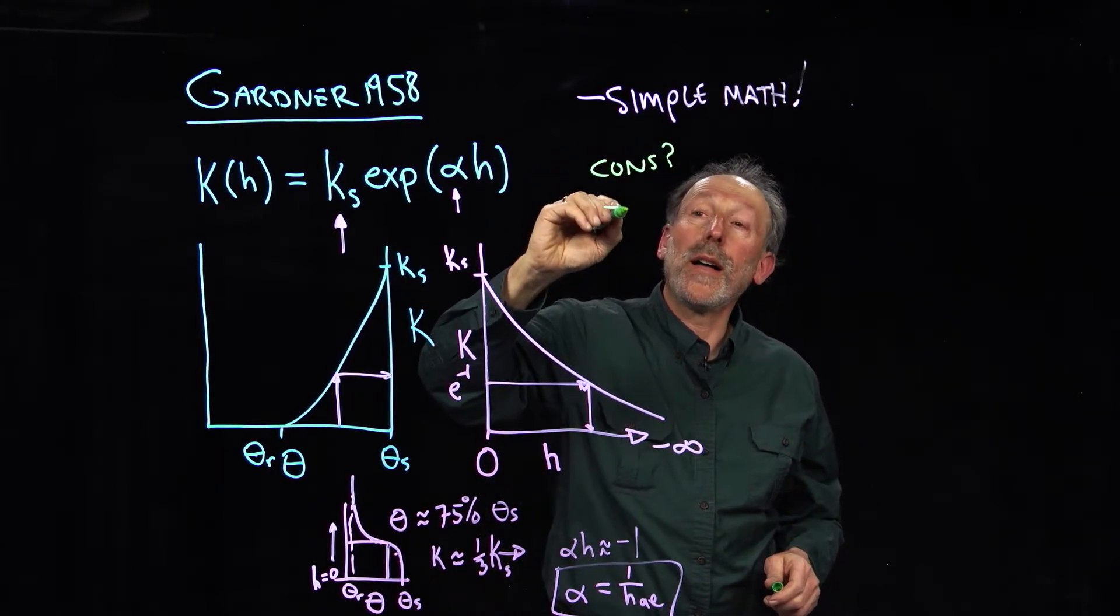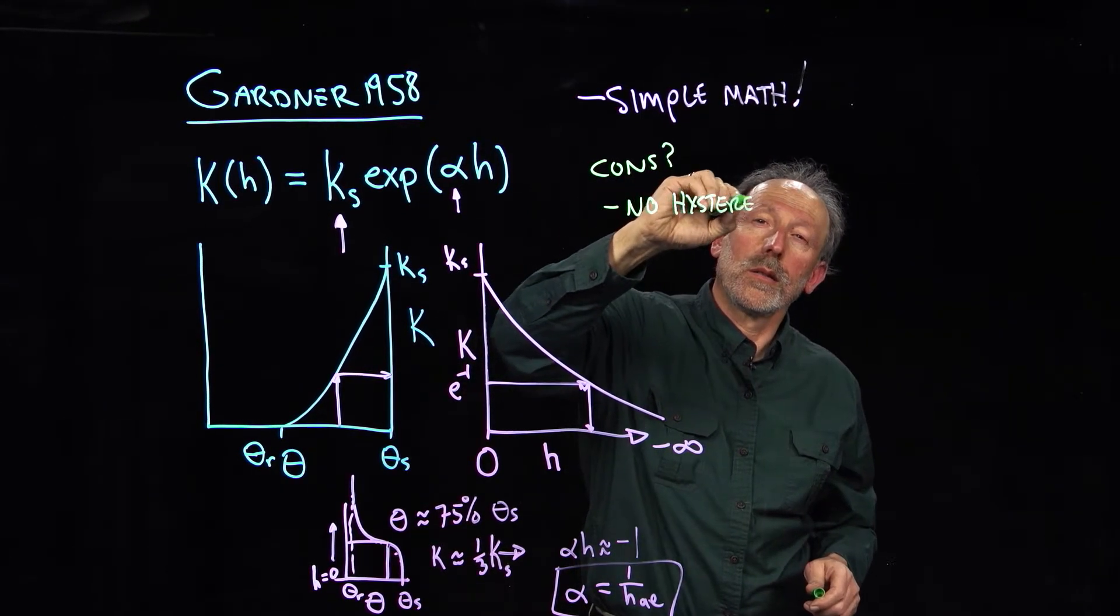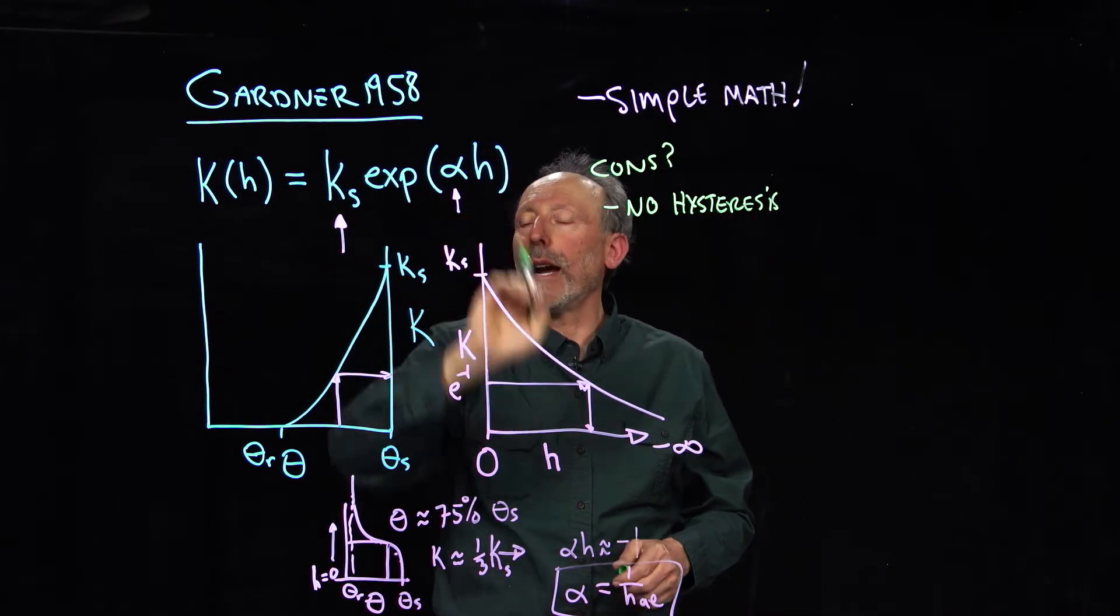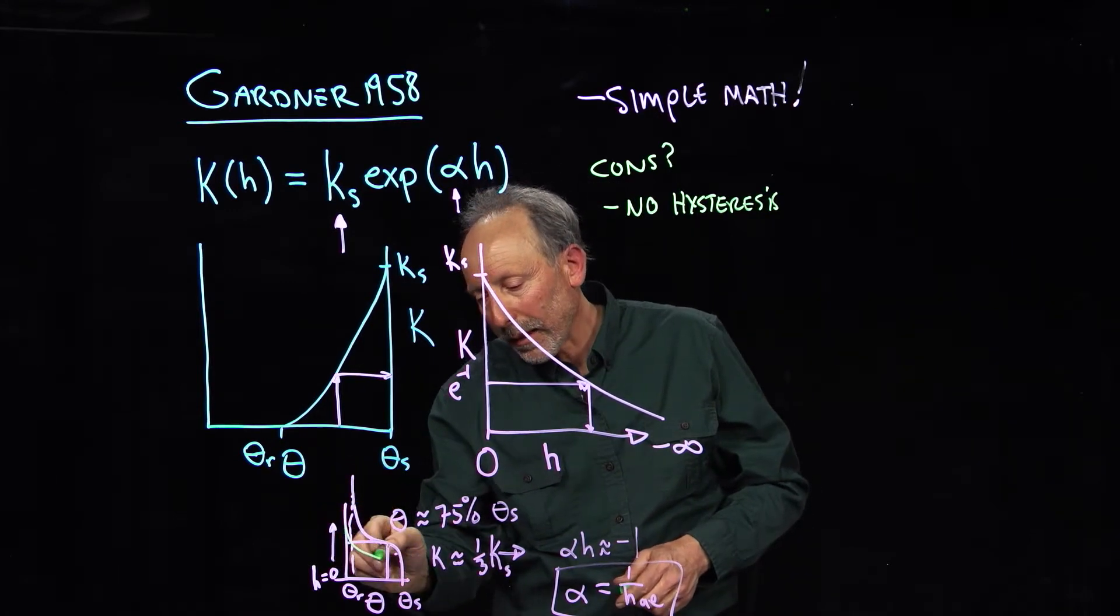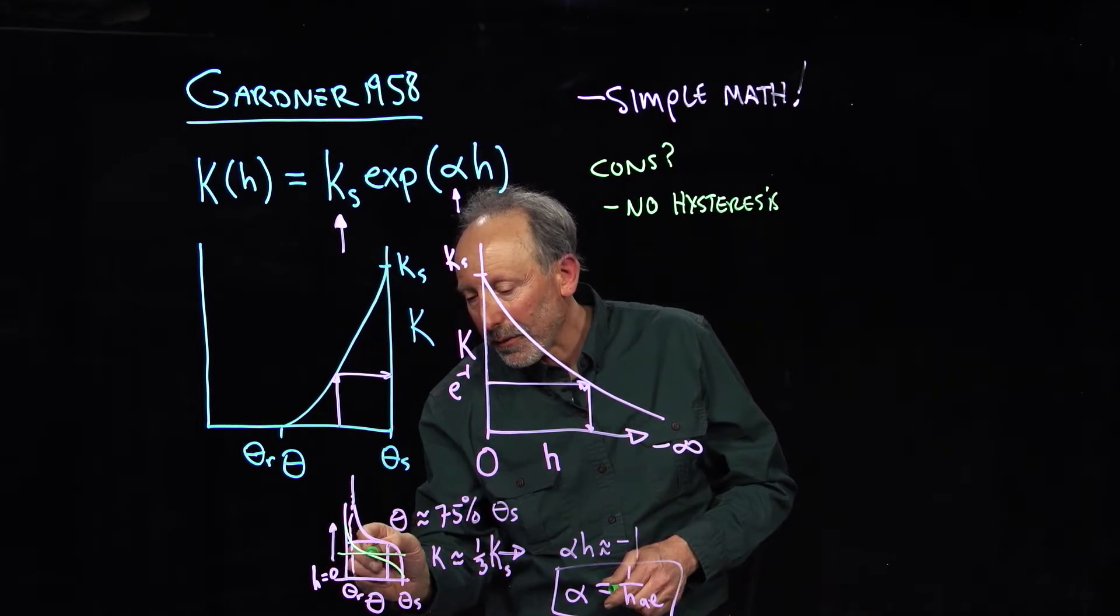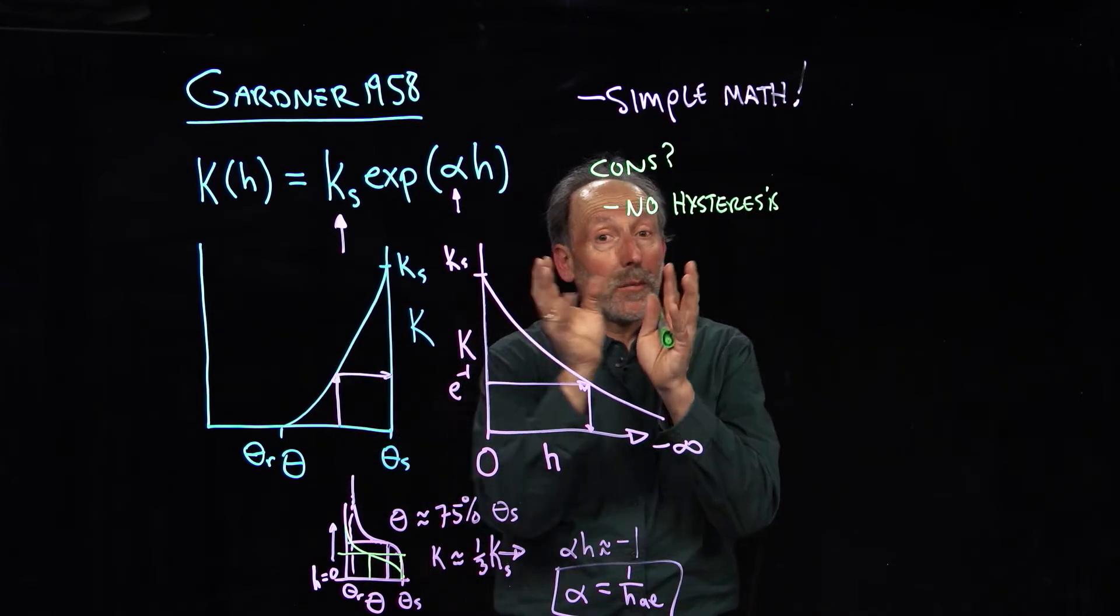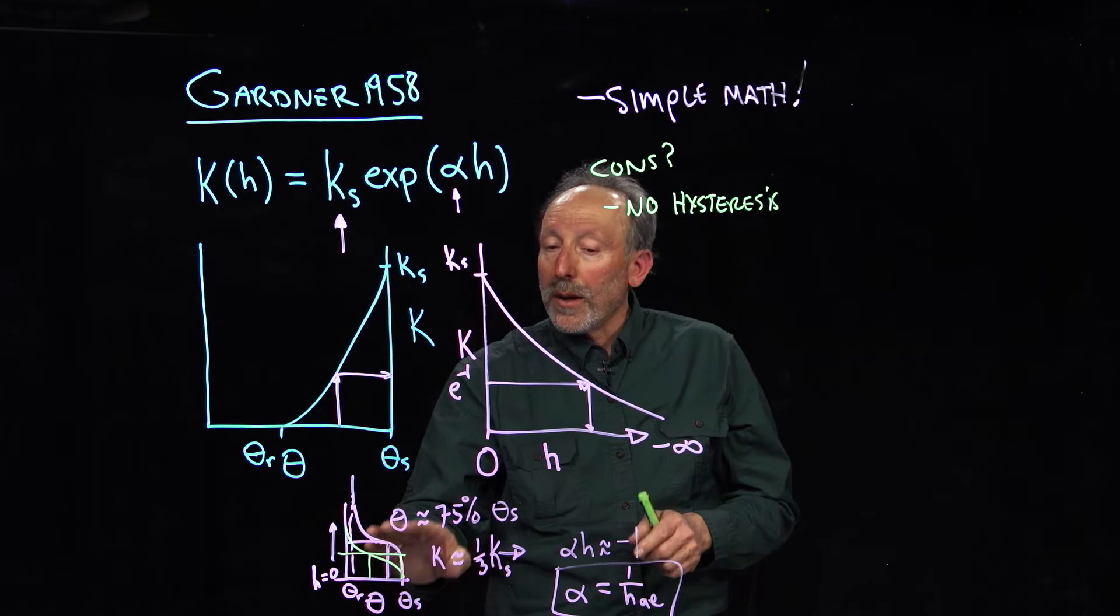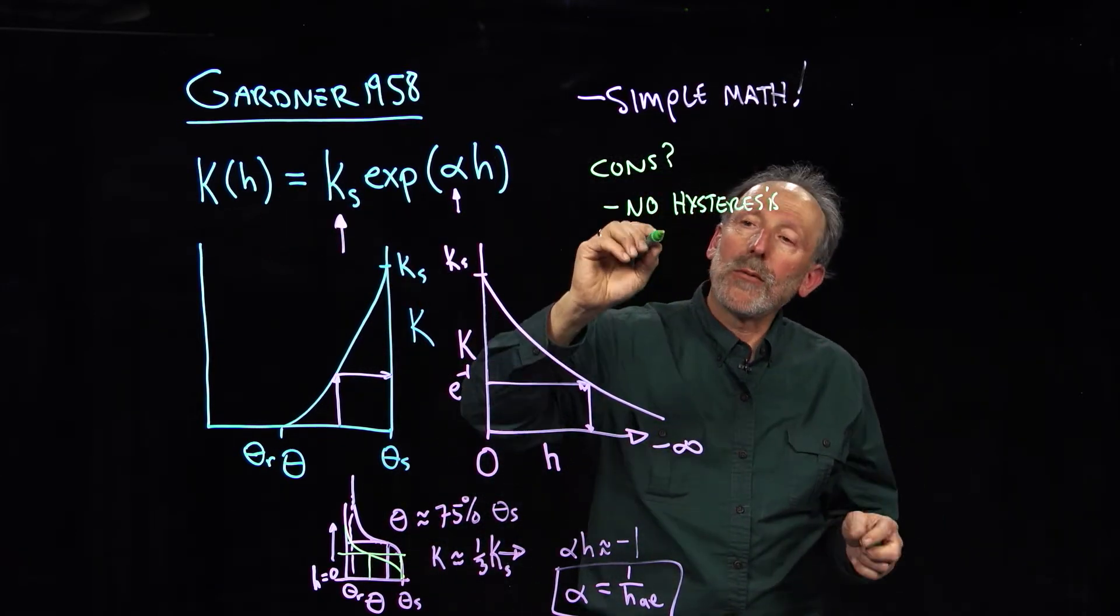Well, number one, no hysteresis. We're saying that conductivity is a function of the pressure, but we know that if this were the draining curve, the filling curve might look like this. And so actually, at any one pressure, you could have two totally different moisture contents. The conductivity really is a function of the geometry of the water, so the water content. And so this function is only going to work for, in general, the draining curve.